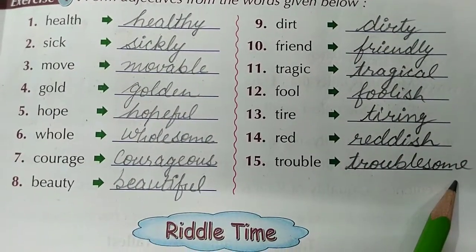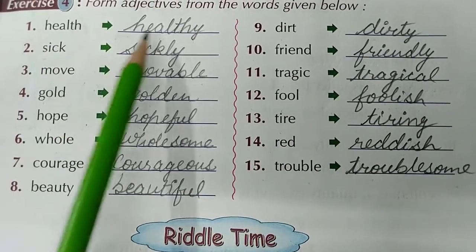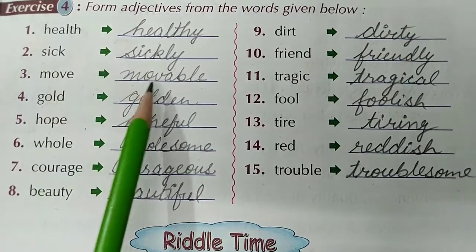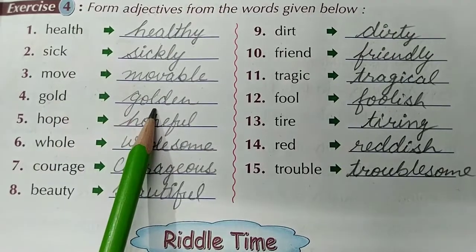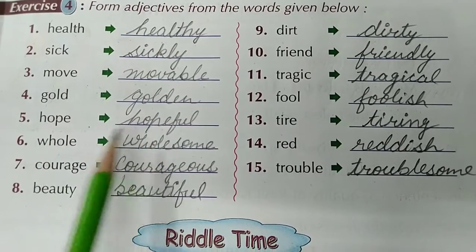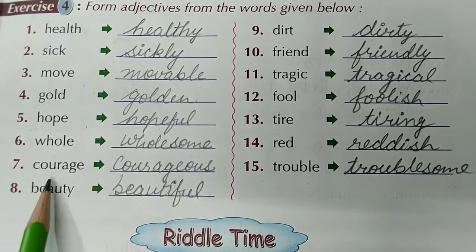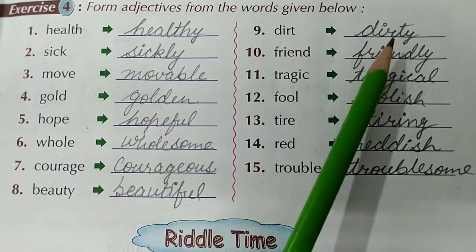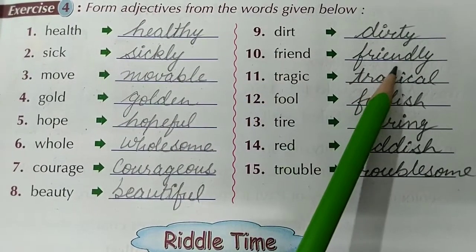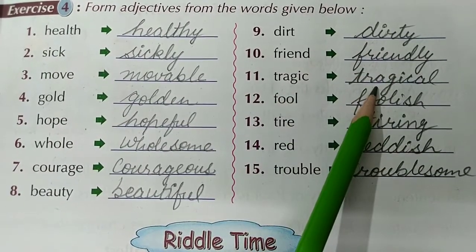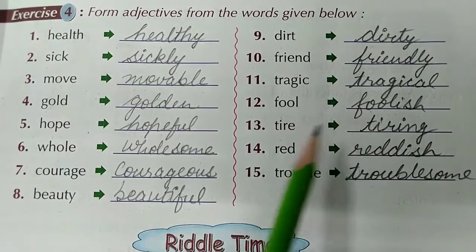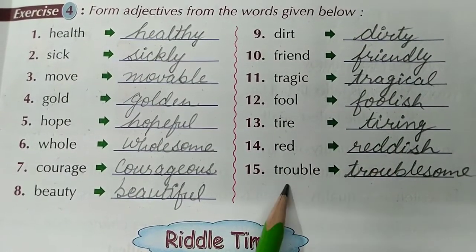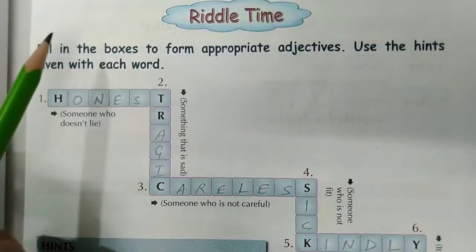Once again: Health → Healthy, Sick → Sickly, Move → Moveable, Gold → Golden, Hope → Hopeful, Whole → Wholesome, Courage → Courageous, Beauty → Beautiful, Dirt → Dirty, Friend → Friendly, Tragic → Tragical, Fool → Foolish, Tire → Tiring, Red → Reddish, Trouble → Troublesome. After exercise 4, now it's riddle time.